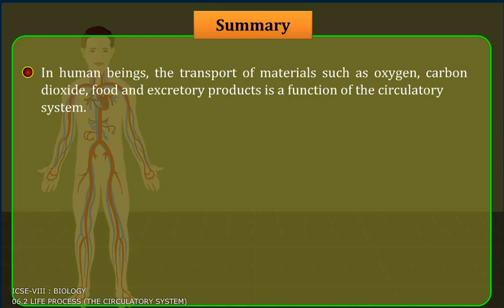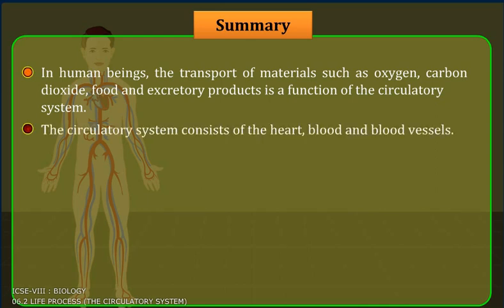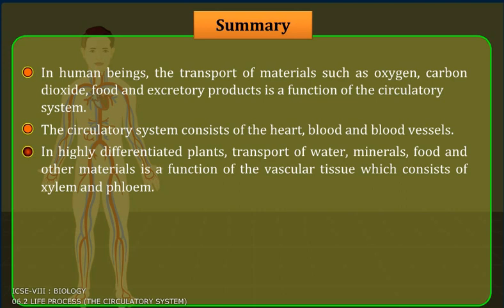Summary: In human beings, the transport of materials such as oxygen, carbon dioxide, food and excretory products is a function of the circulatory system. The circulatory system consists of the heart, blood and blood vessels. In highly differentiated plants, transport of water, minerals, food and other materials is a function of the vascular tissue, which consists of xylem and phloem.